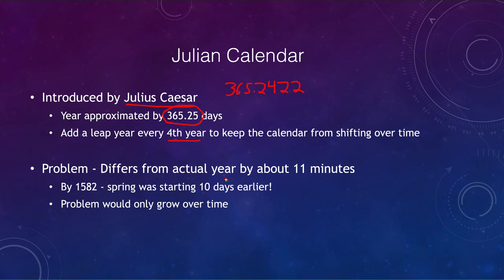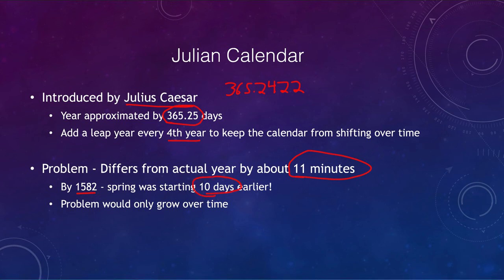The problem with the Julian calendar is that it differs from the actual year by 11 minutes. Eleven minutes isn't noticeable over a lifetime, but over long periods it accumulates. By 1582 it had amounted to 10 days. Spring was starting earlier and earlier, causing problems with the calendar — particularly with when Easter would occur — and the problem would continue to grow.